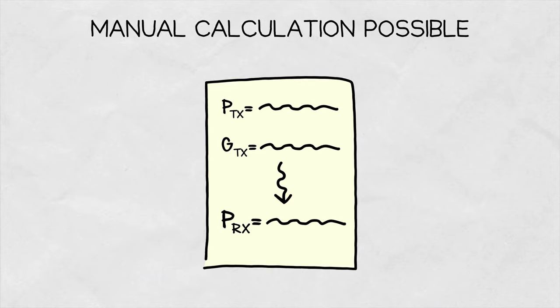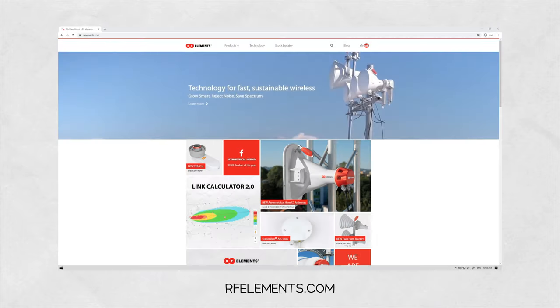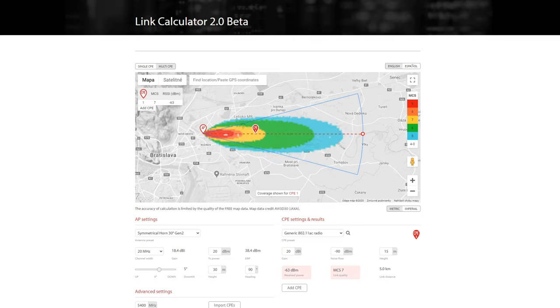All this can be done on paper, but most of the radio and antenna manufacturers in the WISP industry have an online tool which does the calculation for you. All you need to do is set up the parameters of your link to get a result.